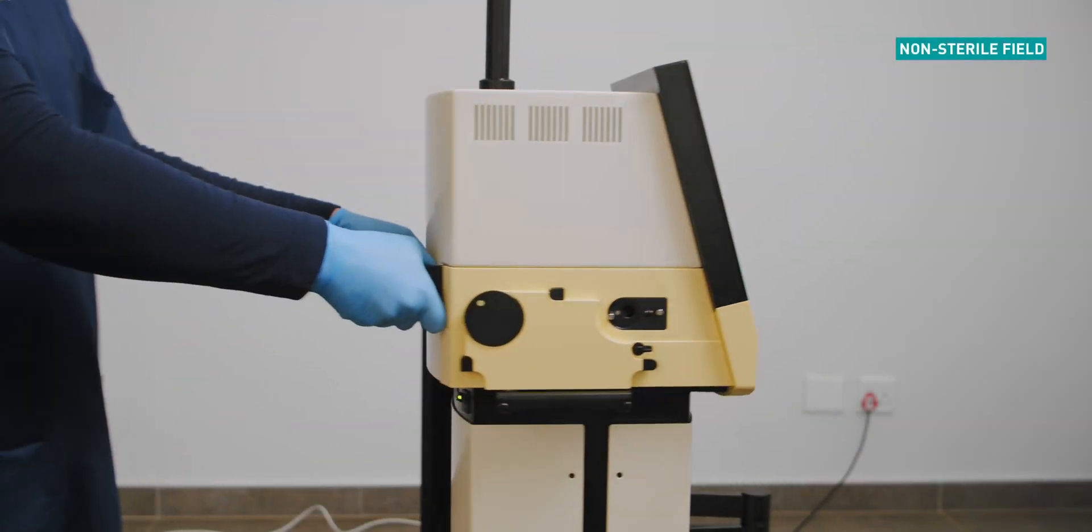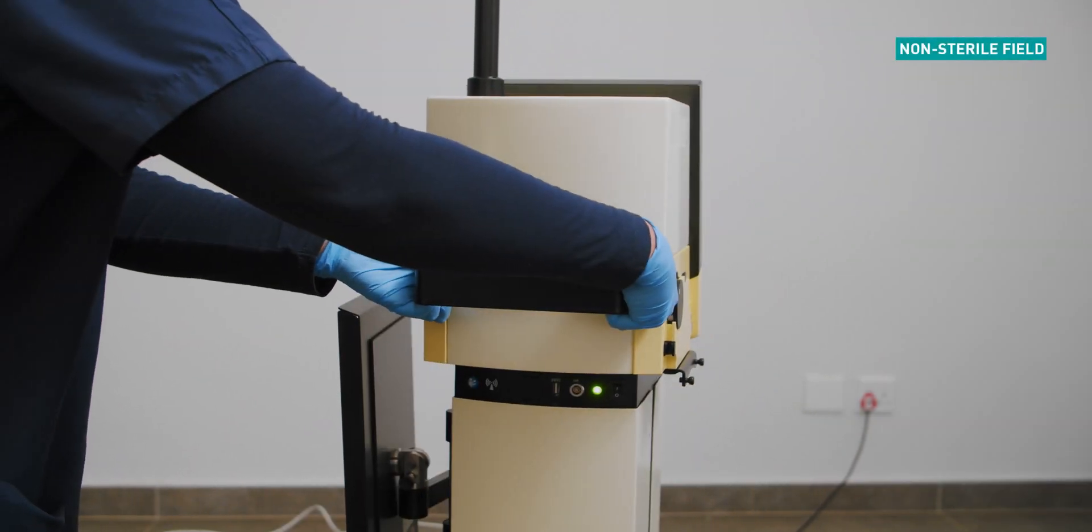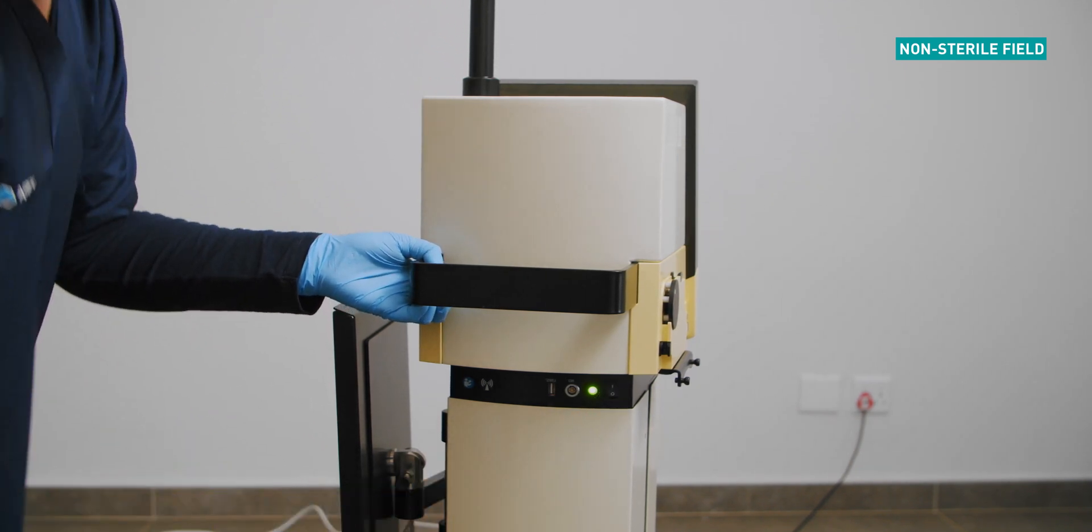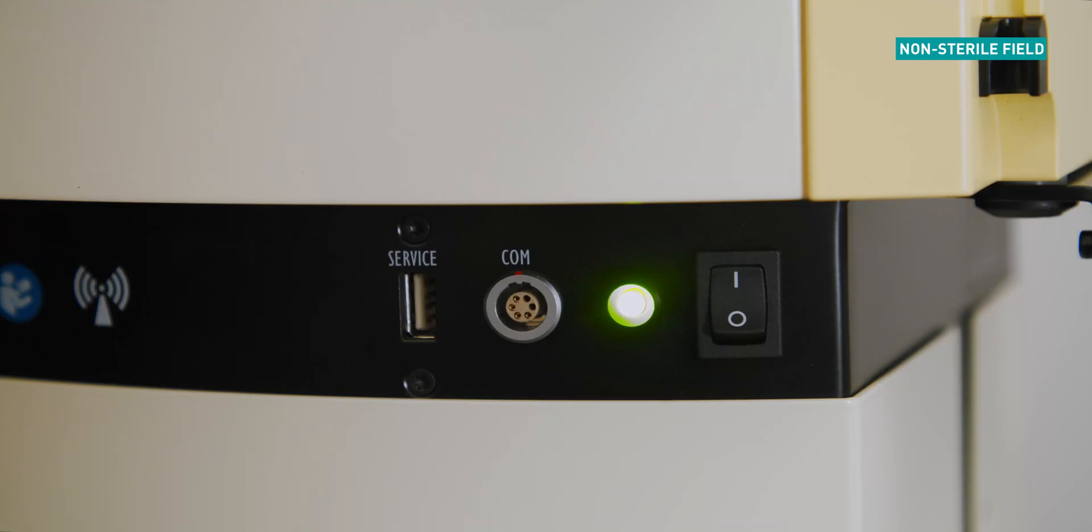To power on, select the power on button situated on the back of the machine. Make sure the LED indicator is green.